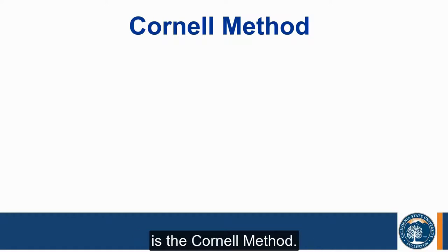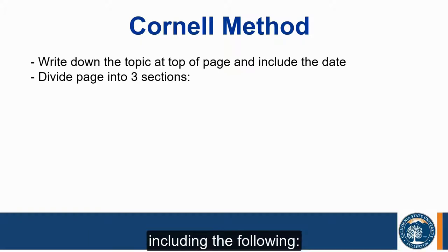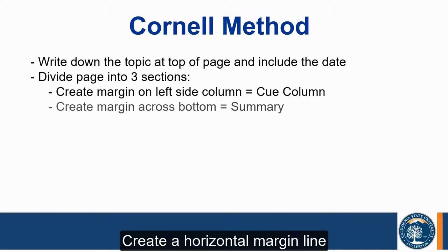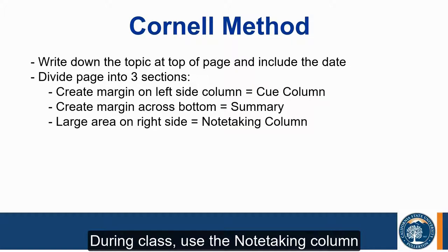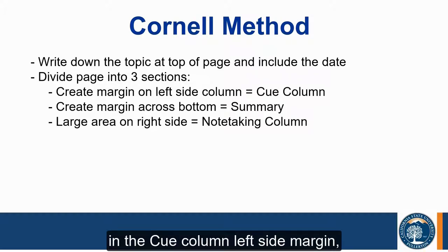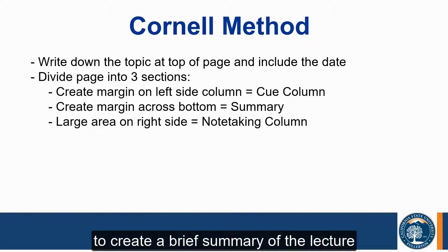Another note-taking format is the Cornell method. This is a very specific page setup beginning with writing the topic at the top of the page including the date. Divide the page into three sections: a vertical line on the left side margin known as the Q column, a horizontal margin line across the bottom of the page about 5 lines from the bottom known as the summary column, and the remaining large area in the middle to right portion of the page as the note-taking column. During class, use the note-taking column to take notes in your preferred format. After class, review your notes adding keywords or questions in the Q column for main points, and use the summary column to create a brief summary of the lecture.